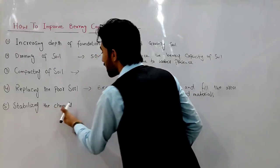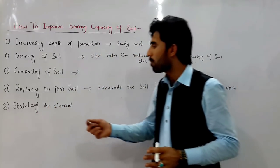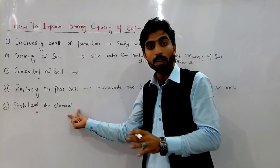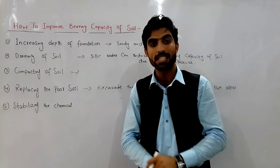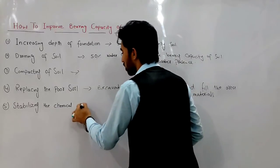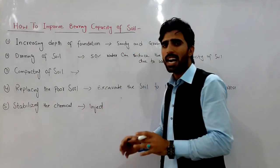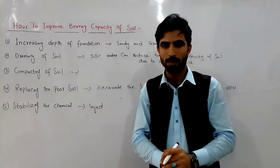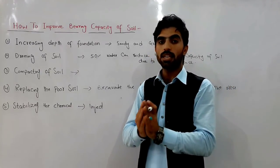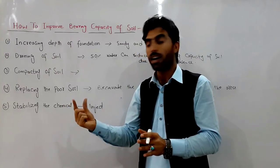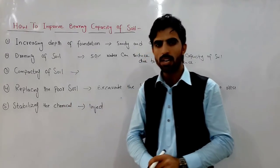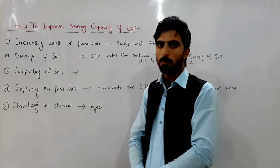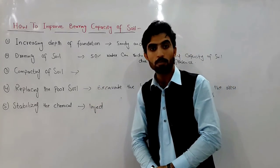The fifth method is stabilizing with chemicals on soil. We can inject and apply chemicals into the soil to increase the bearing capacity. There are certain chemicals which can improve the bearing capacity of soil — when we inject those chemicals into the soil, it gives the result of improved bearing capacity. These are the important methods by which we can improve the bearing capacity of soil.